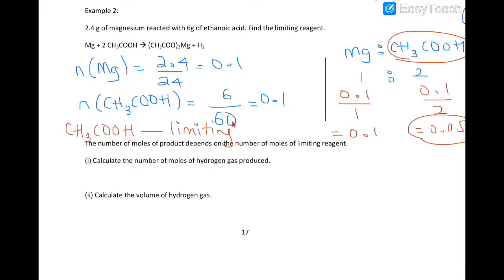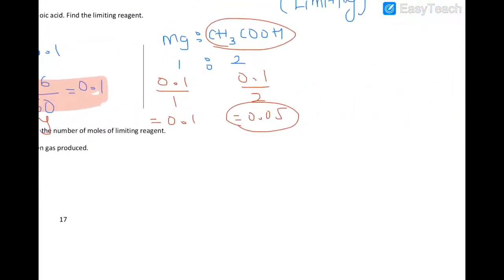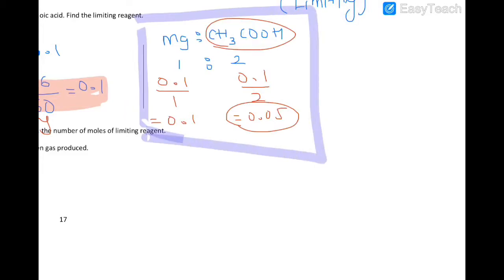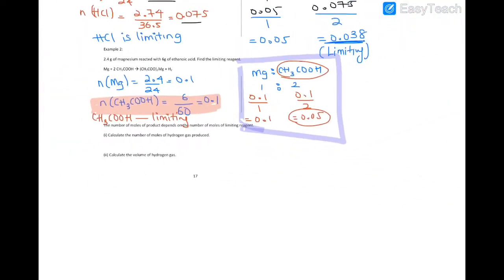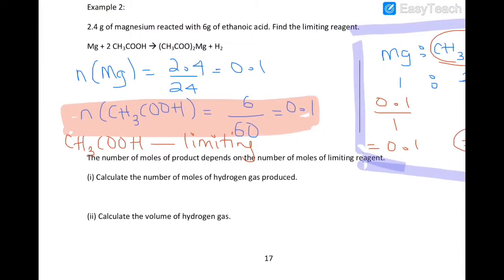The value 0.05 is the smallest, which means ethanoic acid is the limiting reagent. Whenever we proceed with any calculation, we use the number of moles of ethanoic acid — calculated as mass over Mr. Do not use any values from the side calculation used to find the limiting reagent; that was only rough work. We will use the number of moles of ethanoic acid to calculate the number of moles of hydrogen gas produced.